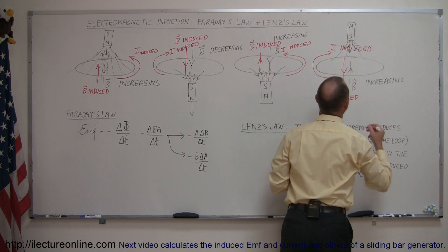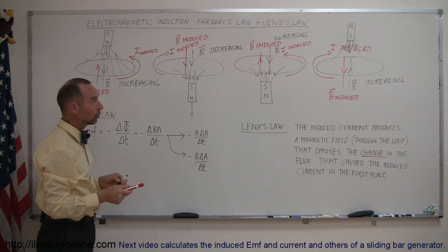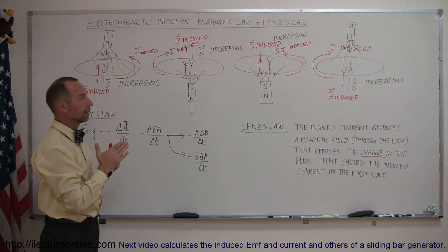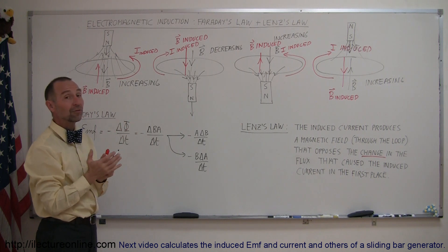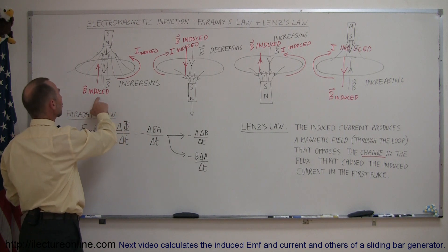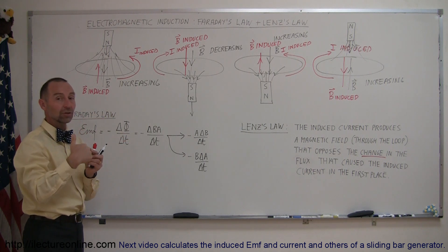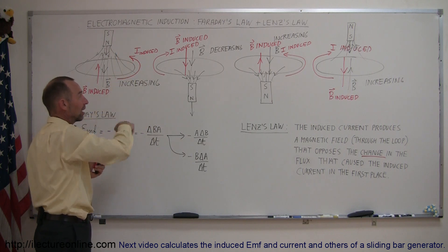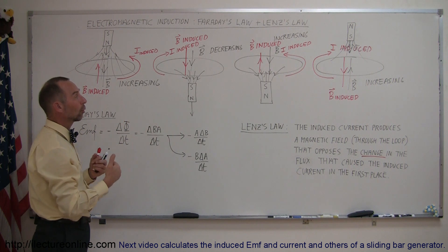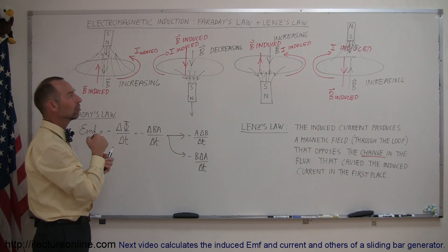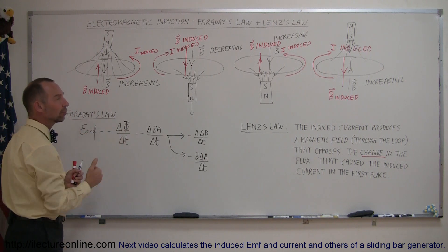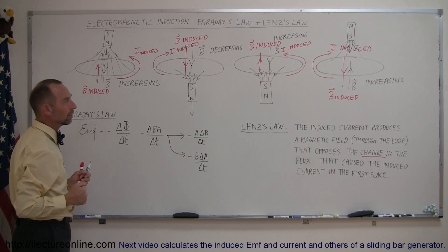And that's how we determine the direction of the induced current. We look at the direction of the magnetic field that causes the change in the flux, then figure out whether that magnetic field is increasing or decreasing. If increasing, you set up an induced magnetic field in the opposite direction to prevent the increase. If decreasing, the induced current sets up a magnetic field in the same direction to prevent the decrease. Faraday's Law tells you the magnitude of the induced EMF and current. Lenz's Law tells you the direction of the induced current.